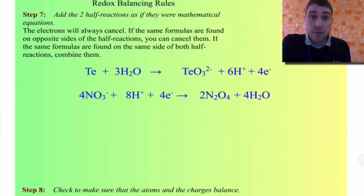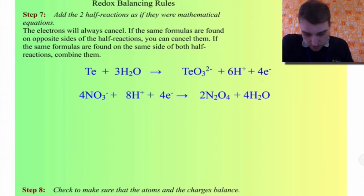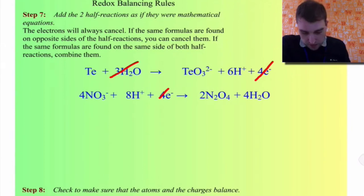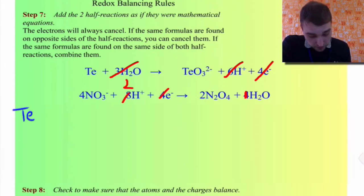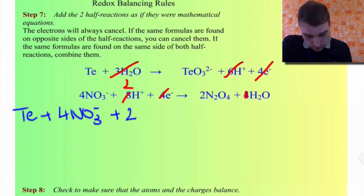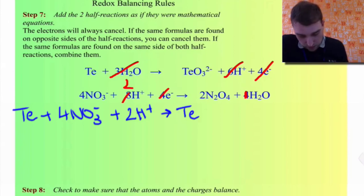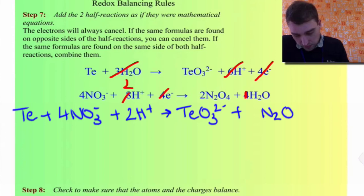The next step is to treat the equations as mathematical equations, cancel things on both sides, and add them together. The electrons cancel out — if they don't, something is wrong. We have three water molecules on the left of the top equation and four on the bottom right, so three cancel leaving one water on the right. We have six H⁺ on the top right and eight on the bottom left, so six cancel leaving two H⁺. The result is: Tc + 4 NO₃⁻ + 2 H⁺ → TcO₃²⁻ + 2 N₂O₄ + H₂O.